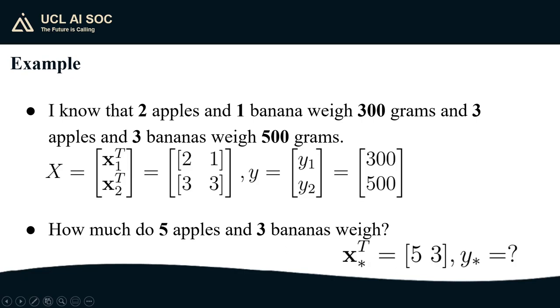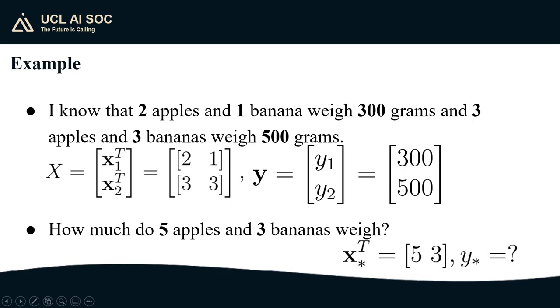Let's look at a concrete example. The problem is as follows. I know that two apples and one banana weigh 300 grams and three apples and three bananas weigh 500 grams. So what are x and y in this particular case? Well, each of the small x's is going to be a vector of the different observations so x1 is 2,1 and x2 is 3,3 and the matrix x is just those vectors stacked on top of each other. And y is going to be all my different quantities of interest stacked on top of each other. So y1 is 300 and y2 is 500. Then, if I want to answer the question how much do 5 apples and 3 bananas weigh, I can prepare a test vector x star with 5 as the first component and 3 as the second component and try to infer y star.